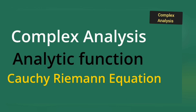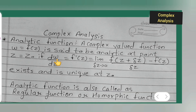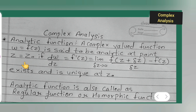Today I am going to start with complex analysis. I am going to teach you what is the analytic function and the Cauchy-Riemann equation. A complex-valued function w = f(z) is said to be analytic at a point z = z₀ if it satisfies the given condition. This is the condition for analytic.